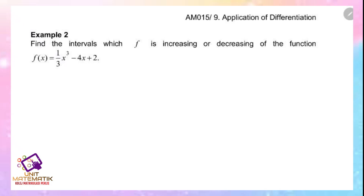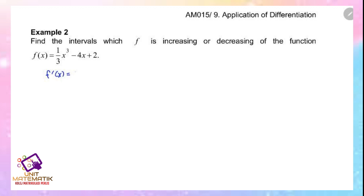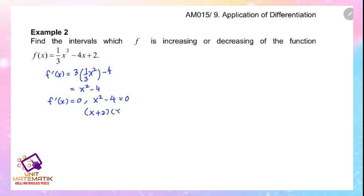Example 2: Find the intervals where f is increasing or decreasing for the function f(x) equals (1/3)x cubed minus 4x plus 2. First, find the stationary points by computing f prime: 3 times (1/3)x squared minus 4 equals x squared minus 4. Equate the derivative with 0 and factorize: (x plus 2)(x minus 2) equals 0, giving x equals negative 2 and x equals 2.